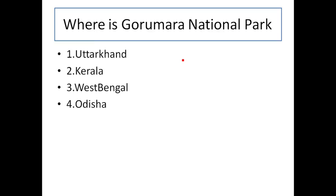Before going to the tricks, today's question is: Where is Gurumara National Park? Option A: Uttarakhand. Option B: Kerala. Option C: West Bengal. Option D: Odisha. Friends, if you know the answer, please do comment and give your answer in the comment.